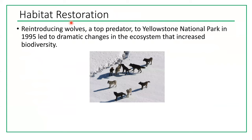One successful example of habitat restoration was the reintroduction of wolves — a top predator — to Yellowstone National Park in 1995, which led to dramatic increases in ecosystem biodiversity. Wolves are a keystone species in Yellowstone, and when they were hunted to local extinction, the whole ecosystem of the park suffered. Restoring them successfully restored the ecological balance.